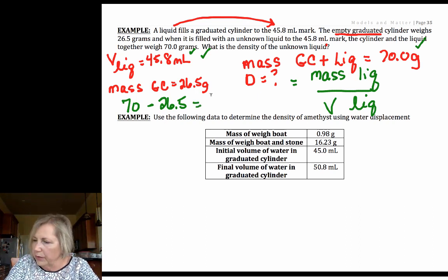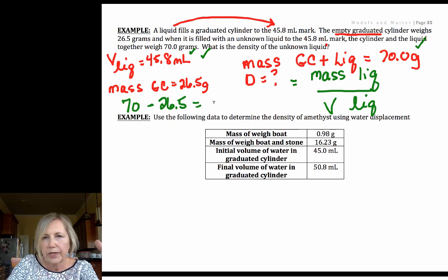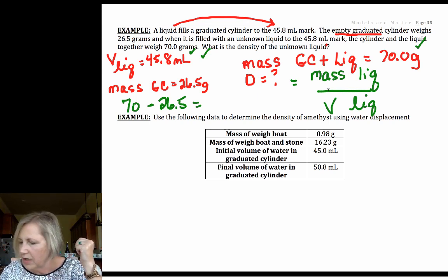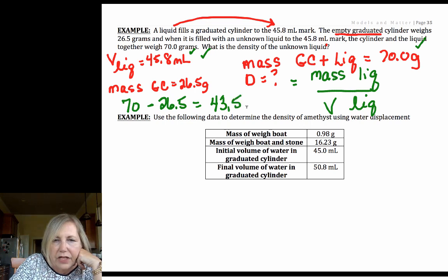Sorry, there was a little fruit fly running around there. And I am going to get my mass of just my liquid. So 70, I didn't grab that number so let me do that real quick. 70 minus 26.5, I did it all in one step. 70 minus 26.5 is 43.5. So that means I've got 43.5 grams is my mass of my liquid.